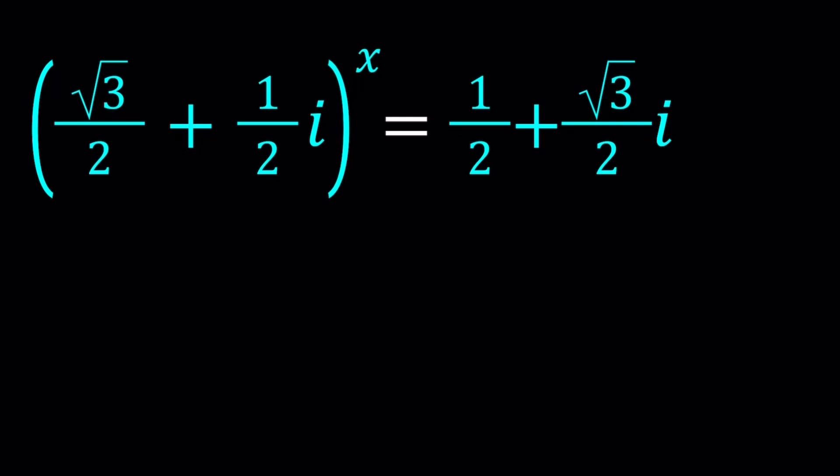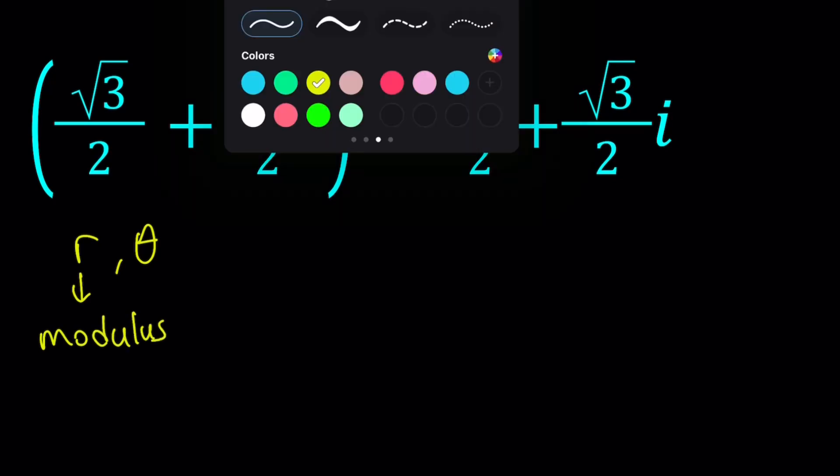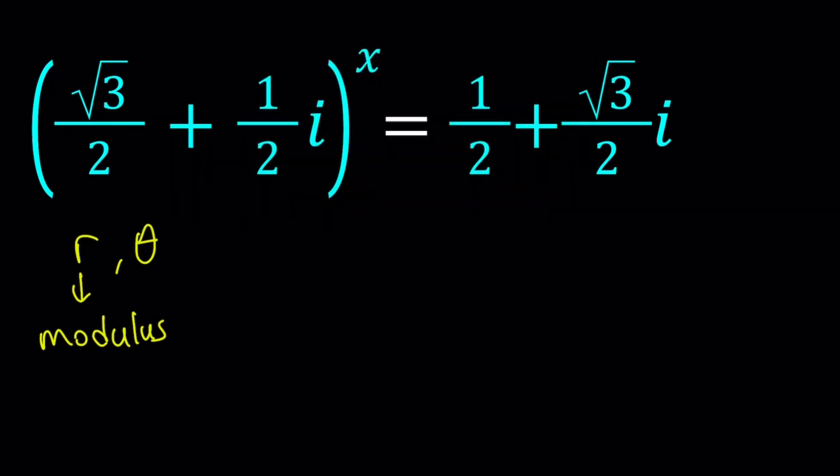To be able to write a number in polar form, first of all, we have to find two things. One of them is r, the other one is theta. r is the modulus, or you could also call it absolute value. How do you find that? You take the real part and imaginary part, you add their squares, and you square root it. In other words, this is the distance from zero.